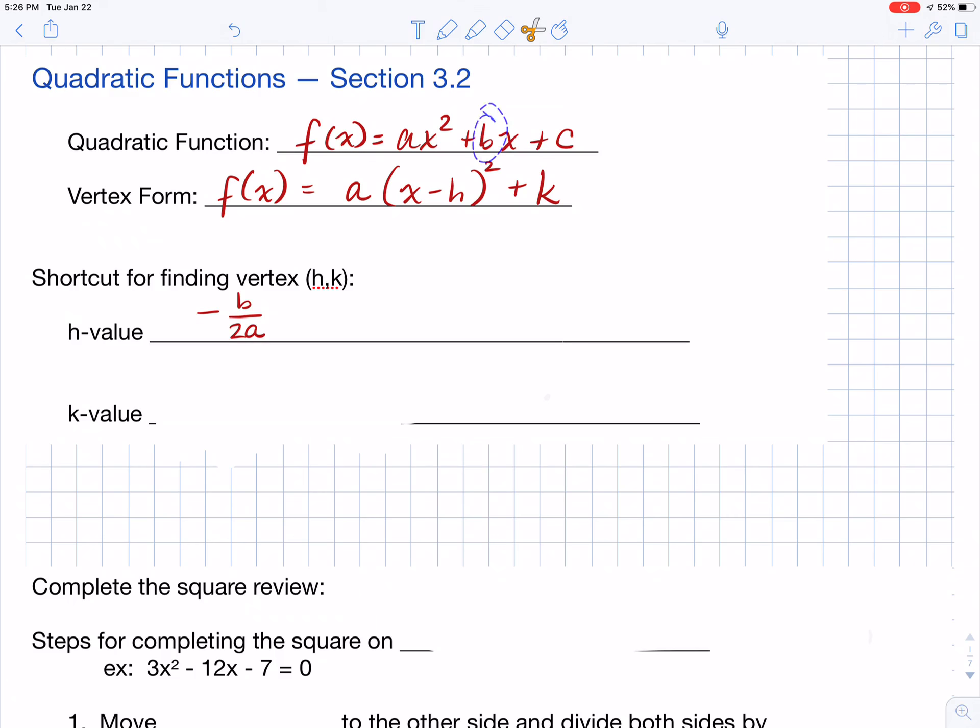And again, I'm referring back to those letters b and a that I mentioned just a few seconds ago. That's how I'm going to find the h value. Well, once I know the h value, all I need to do is plug and chug to be able to get the k value of my vertex.